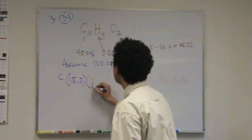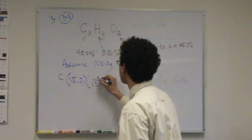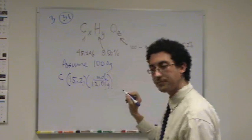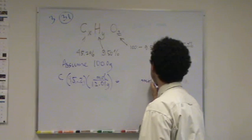Okay. Molar mass of carbon. You can look it up on your periodic table. That's about 12.01 grams per mole. There we go. Moles of carbon.